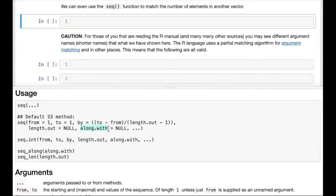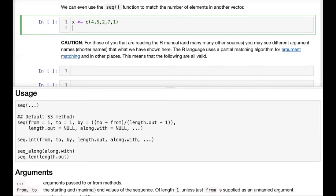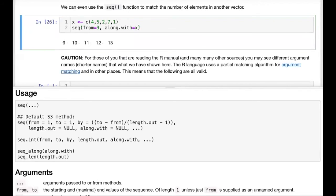So for example, let's create a vector x with some random values. We'll say x left arrow, and then we'll use the c function with 4, 5, 2, 7, and 1. Now we're going to create a sequence starting from the number 9, and then we're going to use along.with to specify that this sequence should have just as many elements as our vector x. So in our output, we see that we have five elements, one for each element that was in the original vector x.